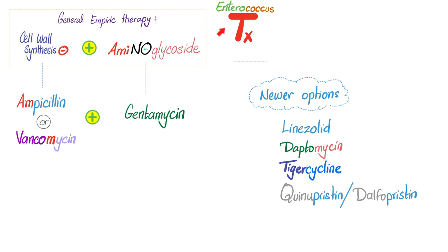How do you manage Enterococci? Remember how we manage endocarditis — you give a cell wall synthesis inhibitor plus an aminoglycoside. For example, ampicillin plus gentamicin, or vancomycin plus gentamicin. Some Enterococci are resistant to one or both of them.